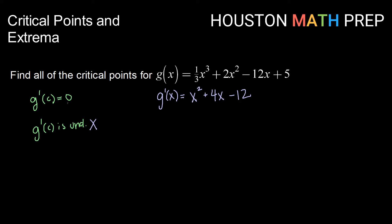Our only hope for critical points for this one is where g prime is equal to zero. So if we take our function and set it equal to zero, then factoring, that would be x plus 6 times x minus 2 equals zero.